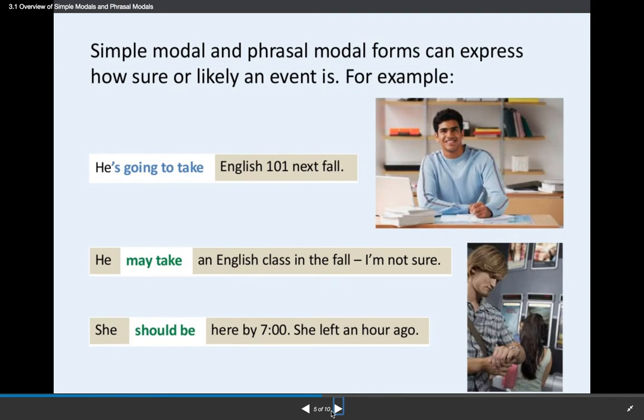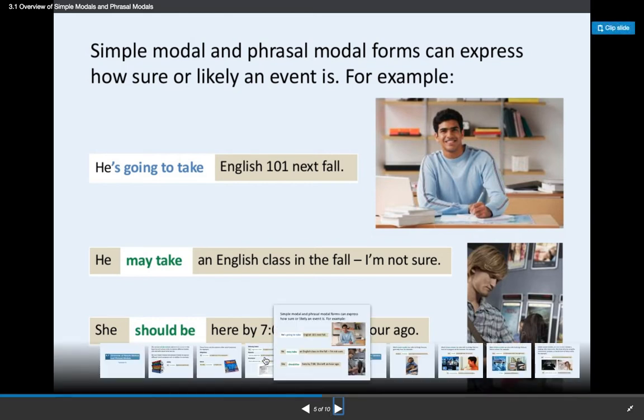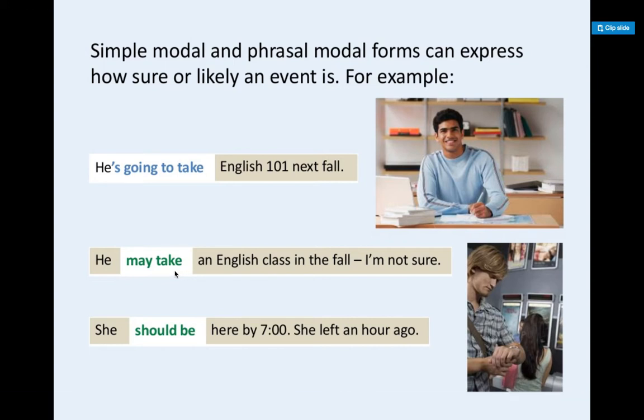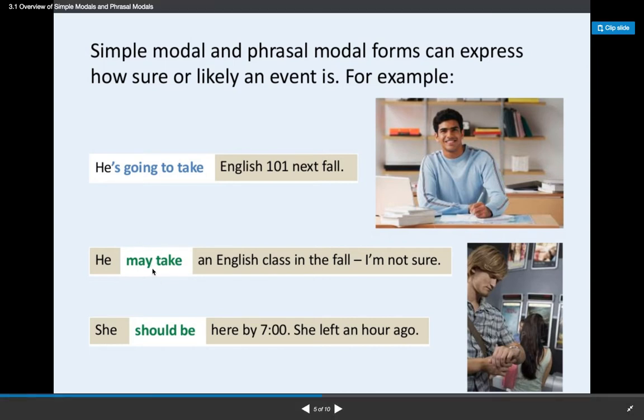Simple modal and phrasal modal forms can express how sure or how likely an event is. For example, he's going to take English 201 next fall. We've learned this before, and it's really a kind of phrasal modal that means it's quite likely and certain. He may take English in the fall. I'm not sure. This is maybe, and this is a simple modal expressing maybe.